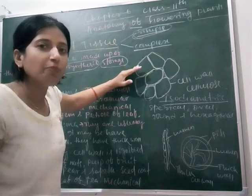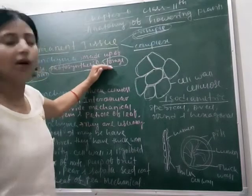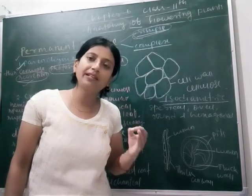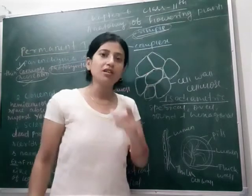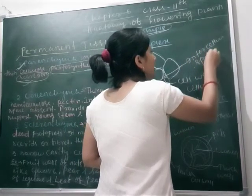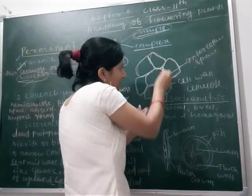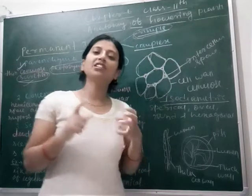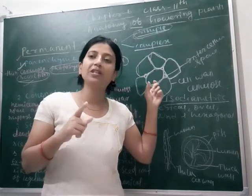Let's have a quick recap of parenchyma. Parenchyma is a simple tissue made up of similar types of cells. The tissue is isodiametric and the cells are either oval, round, spherical, or hexagonal. Their main functions are photosynthesis, storage, and secretion, and their cell walls are made up of cellulose. They have intercellular spaces — when the cells are arranged, some space is left between them, which is called intercellular space. Due to the presence of intercellular space, they cannot give mechanical support to the plant.